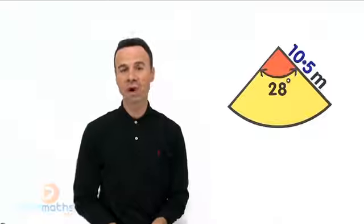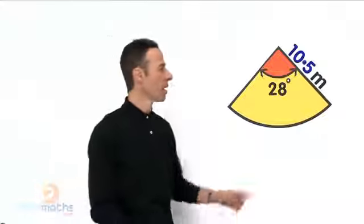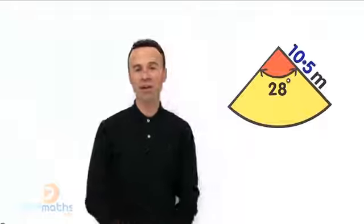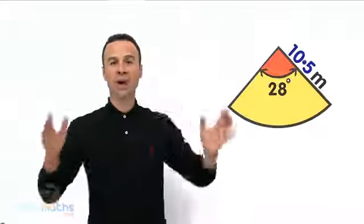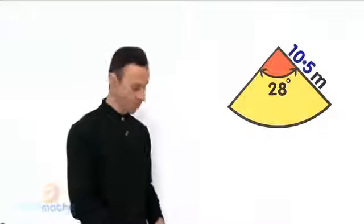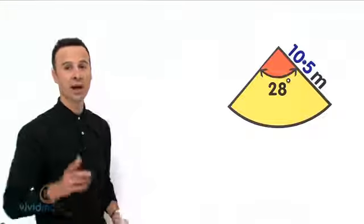Now we have an angle. It is a fraction of the whole revolution, 360 degrees of the whole birthday cake if you like. It is 28 degrees, that is the fraction of it. So how do you find the area of a fraction of a whole circle? Well, there is a formula and the formula is as follows.